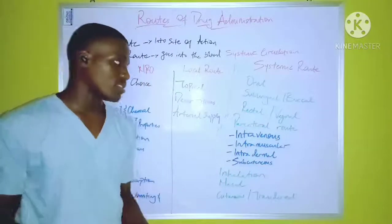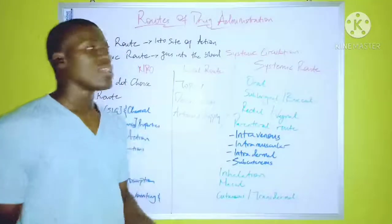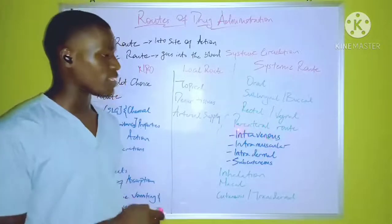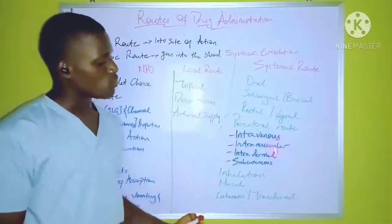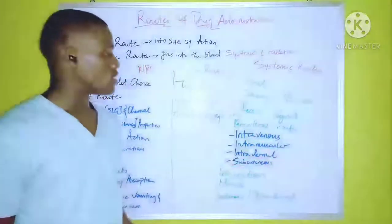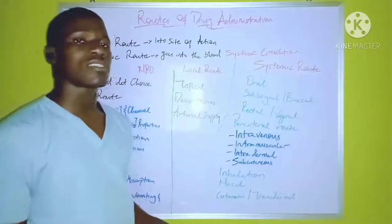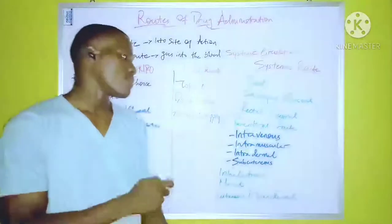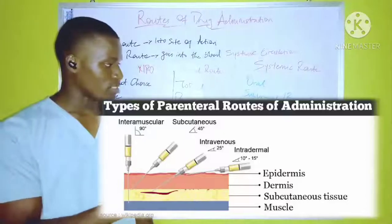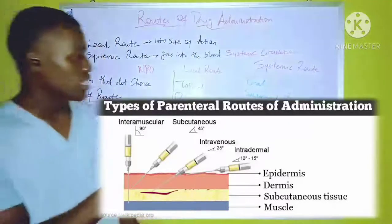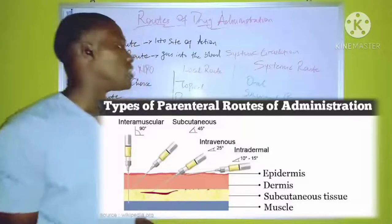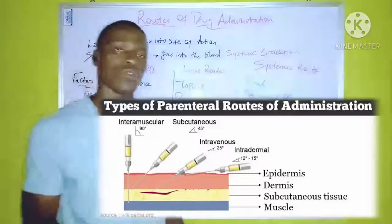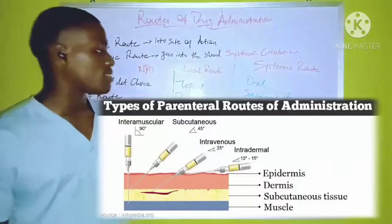The next is the parenteral route of drug administration, which mainly involves administration of the drug using a syringe. There are various types of parenteral routes: the intravenous route, the intramuscular route, the intradermal route, and the subcutaneous route. The intravenous route is one of the quickest routes of administering a drug because the drug is administered directly into the bloodstream through the veins — into superficial veins, which are veins slightly below the skin. All drugs administered through parenteral routes are in liquid form.